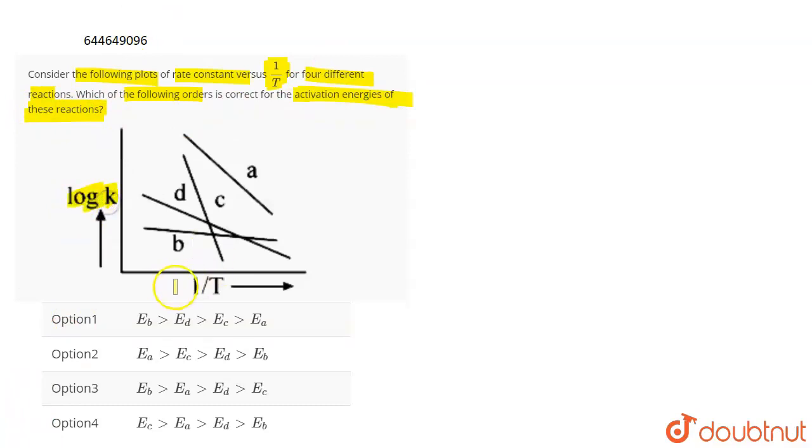So this curve is plotted between log K and 1 by T. Now, according to the Arrhenius equation, we have K is equal to A e to the power minus Ea by RT. Where K is the rate constant, A is the frequency factor or the Arrhenius constant, Ea is the activation energy, R is the gas constant and T is the temperature.